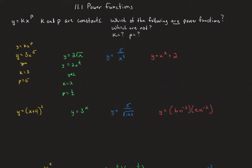For y equals 5 over x to the third, we can think of that as being 5x to the negative 3. So again, it fits our criteria, and the k — the coefficient — is going to be 5, and the p — the exponent — is going to be negative 3.